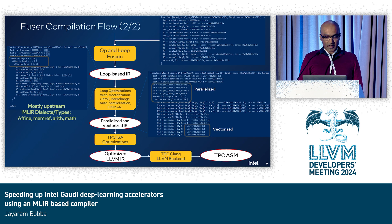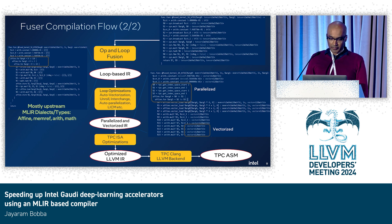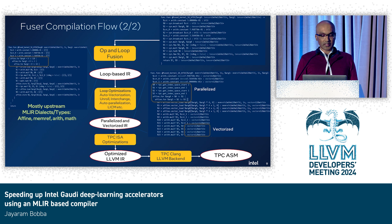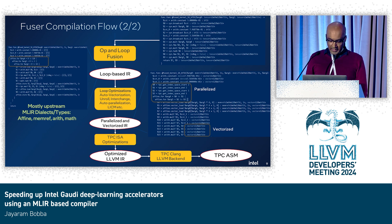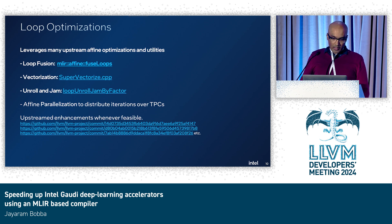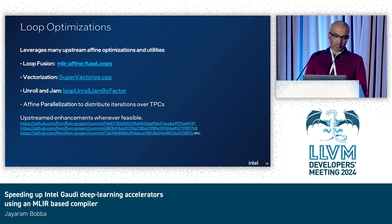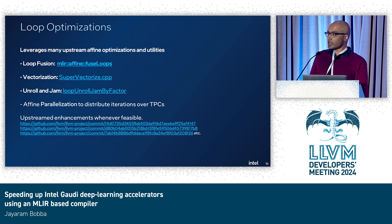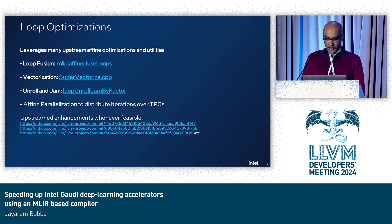After fusion, we get this loop-like IR that you can see on the left. It is mostly consisting of upstream dialects like the affine dialect, the memref dialect, arith, and math. We can do further loop fusion if needed, and then we do more optimizations on these loops. We end up with parallelized and vectorized IR that can run on these 64 tensor processing cores. We then do a bunch more back-end optimizations and finally generate the optimized LLVM IR, which is handed off to the LLVM back-end to generate the final binary. For the loop optimizations, we leverage a lot of upstream affine optimizations, including loop fusion algorithms, the super vectorizer for vectorization, and polyhedral utilities to reason about loops and discover parallel loops. We have contributed upstream enhancements wherever feasible to these different parts of the MLIR dialects.